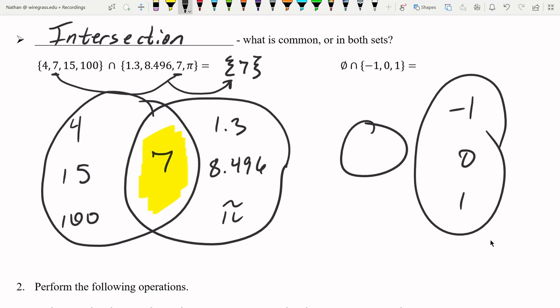And then what's the overlap? Well, the empty set has nothing in it. So there can be no overlap. Therefore, there is no elements in common in both the empty set and negative 1, 0, 1. So the answer is the empty set.